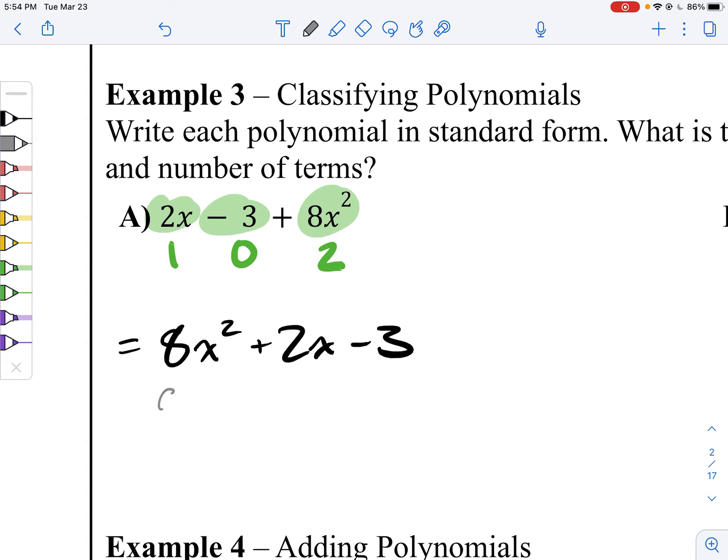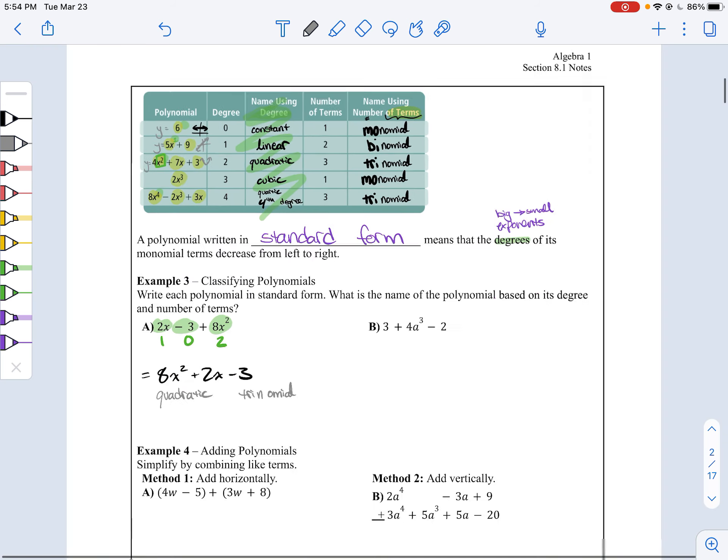This is a quadratic because it's got a degree of two. This is a quadratic and this is also a trinomial because it has three terms.